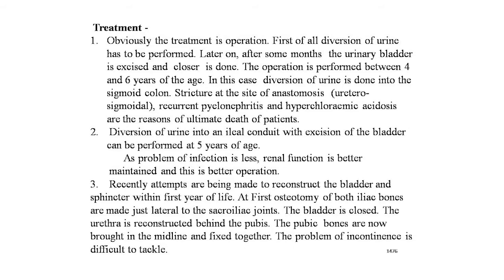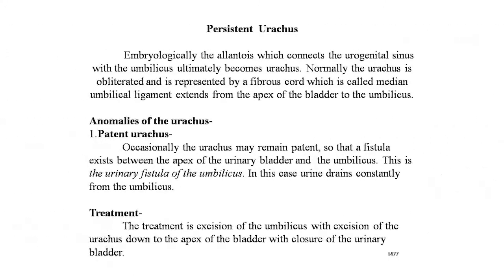The next entity is persistent urachus. Embryologically, the allantois, which connects the urogenital sinus with the umbilicus, ultimately becomes the urachus. Normally, the urachus is obliterated and represented by a fibrous cord called the median umbilical ligament, extending from the apex of the bladder to the umbilicus. In a patent urachus, the urachus remains patent so that a fistula exists between the apex of the urinary bladder and the umbilicus — a urinary fistula of the umbilicus. Urine drains constantly from the umbilicus. Treatment is excision of the umbilicus with excision of the urachus down to the apex of the bladder, with closure of the urinary bladder.